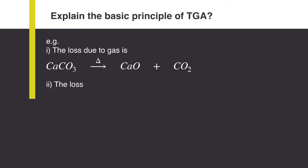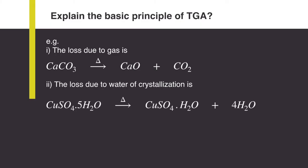The loss due to water of crystallization: copper sulfate pentahydrate on heating produces copper sulfate monohydrate plus four water molecules are lost.